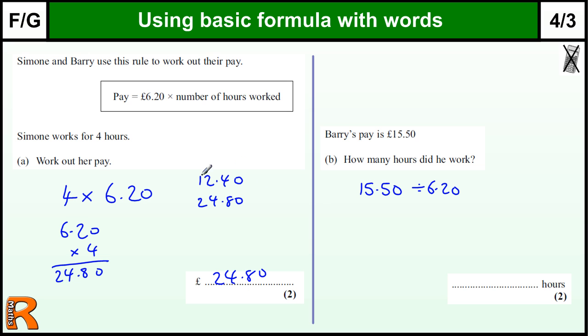So if we use what we've done before, so two hours is £12.40. Okay, three hours, in fact let's not do three hours, let's do £15.50 minus the £12.40, because it's not going to be three hours, it's less than three hours, that's actually equal to £3.10 left over.